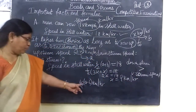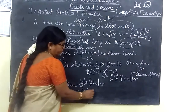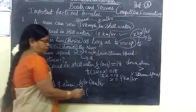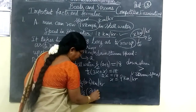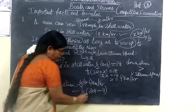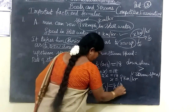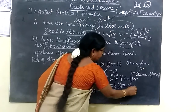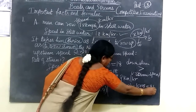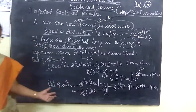Now, for the rate of stream, we use half bracket (A minus B). A is the downstream speed, which is 3X = 3 into 9 = 27, and B is the upstream speed = 9. So, rate of stream = half bracket (27 minus 9) = half into 18, which equals 9 km per hour.